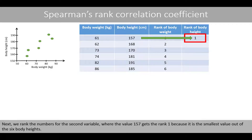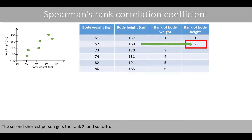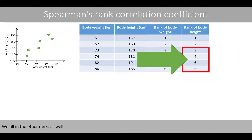Next, we rank the numbers for the second variable. For example, the value of 157 gets rank 1 because it is the smallest value among the six body heights. The second shortest person gets rank 2, and so forth. We fill in the other ranks as well.